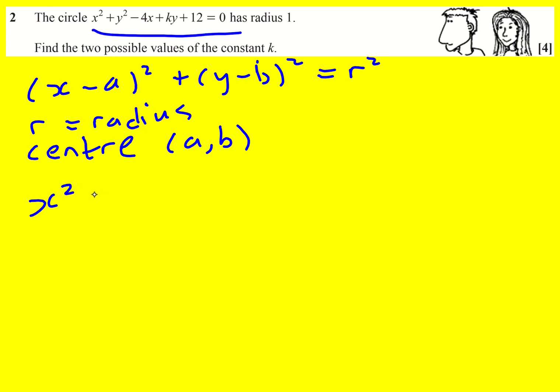I'm just going to put a little preliminary step in. It's going to be x squared minus 4x if I write them next to each other plus y squared plus ky plus 12 equals 0.